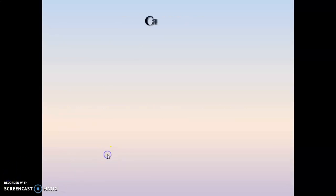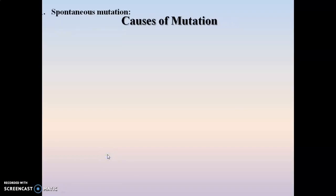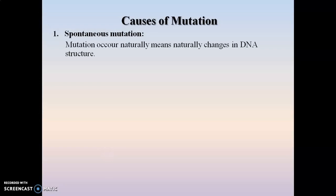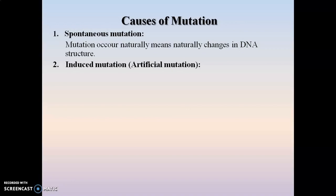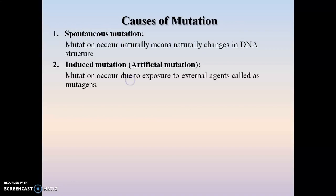Now we will look at the causes of mutation. Mutation either occurs naturally or because of certain external agents. The mutation that occurs naturally is known as spontaneous mutation, where different natural parameters cause changes in the structure of DNA. The second type is induced mutation, where certain external agents are used to induce mutation — this is also called artificial mutation, occurring due to exposure to external agents known as mutagens.